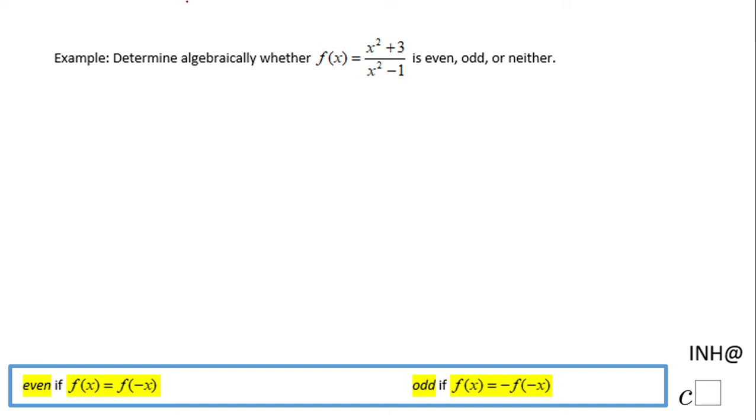Welcome or welcome back to INH at C squared. In this example, we have the function f(x) = (x² + 3)/(x² - 1), and we're going to see if this function is even, odd, or neither. I'm going to use a numerical approach.